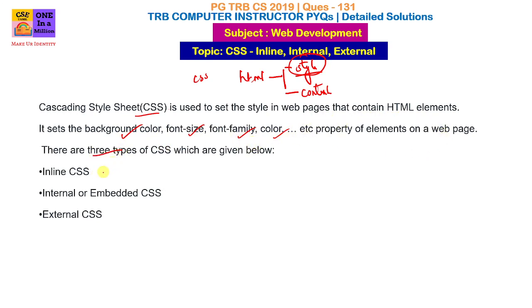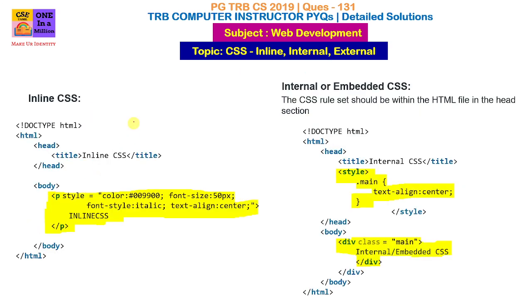There are 3 types: one is inline CSS, internal or embedded CSS, and external CSS. For inline CSS, that style is applied to that particular element directly.